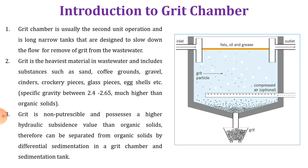The grit chamber is usually the second unit operation and is a long narrow tank designed to slow down the flow for removal of grit from the wastewater. Grit is the heaviest material in the wastewater and includes substances such as sand, coffee grounds, gravel, cinders, crockery pieces, glass pieces, egg shell, etc.